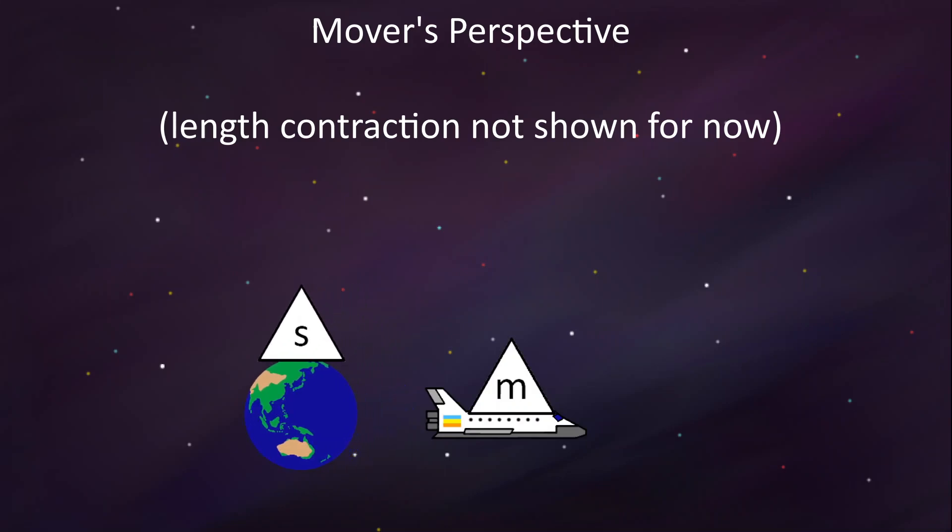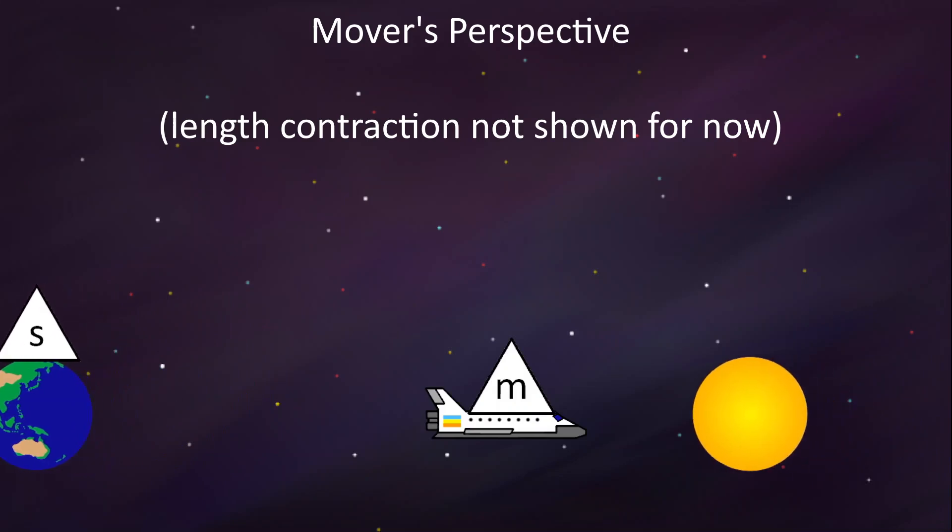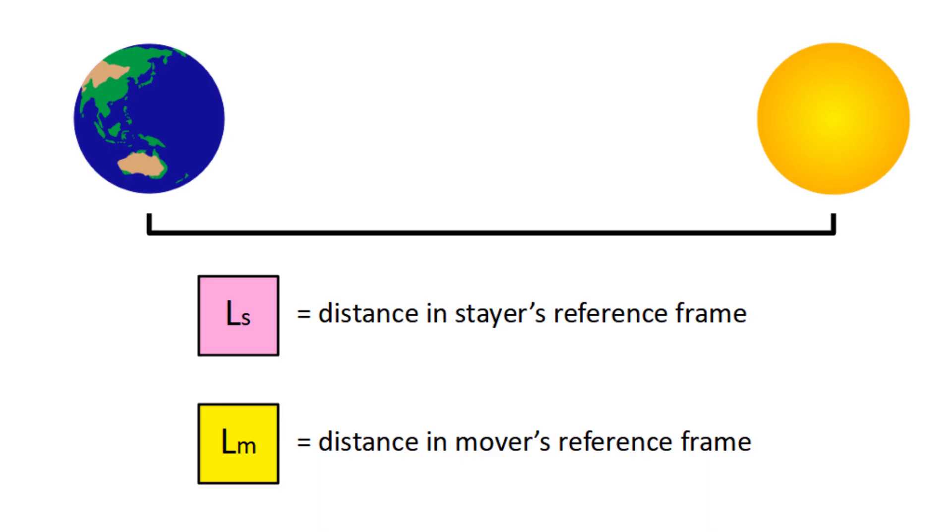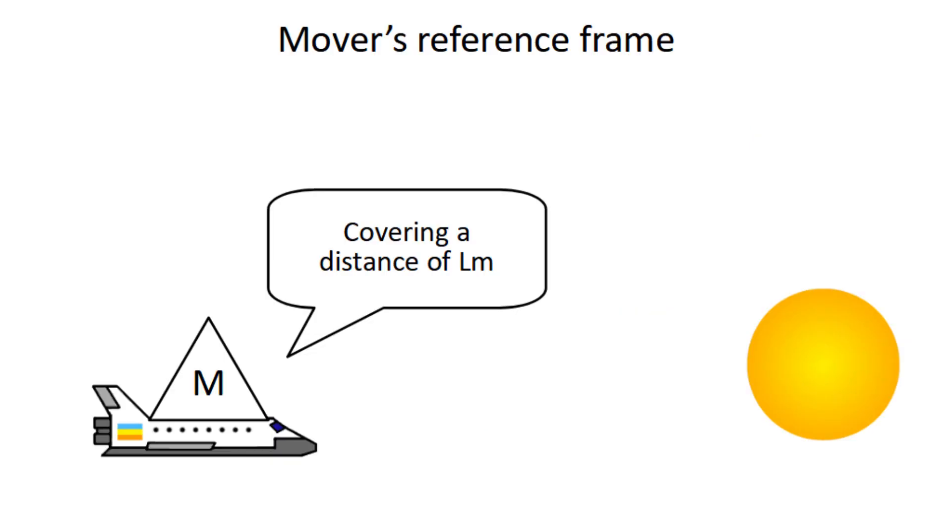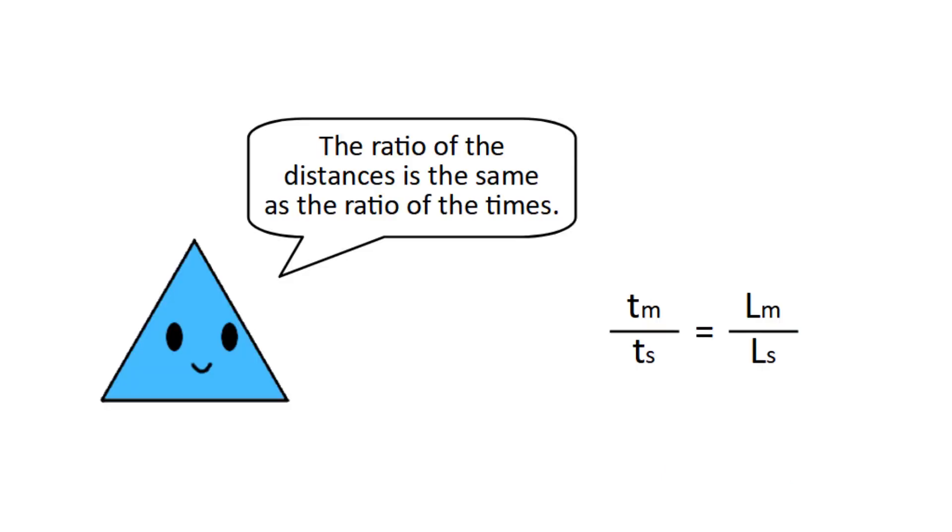But what about the other reference frame? Well, in the mover's perspective, it's not the mover moving towards the star, it's actually the star that's moving towards them at velocity v. This doesn't matter, though, because the distance traveled is still going to be lm. This time, the time taken is tm, and again, velocity is distance over time, so we get v equals lm over tm. Then we can combine the two equations by substituting one into the other. We can then multiply by tm and divide by ls to get tm over ts equals lm over ls. This equation has a really nice intuitive interpretation. The ratio of the distances is the same as the ratio of the times.